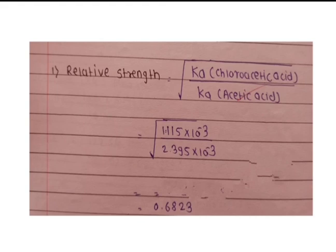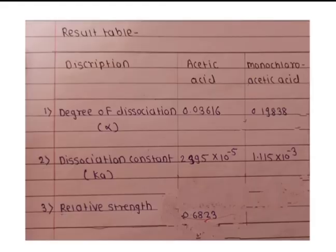Find out the relative strength: square root of (Ka of chloroacetic acid divided by Ka of acetic acid). Substituting the experimental values — 1.115 × 10⁻³ divided by 2.395 × 10⁻³ — the relative strength of monochloroacetic acid to acetic acid is equal to approximately 0.68. In the result section, note down the degree of dissociation and dissociation constant for both acetic acid and monochloroacetic acid, and record the final relative strength.